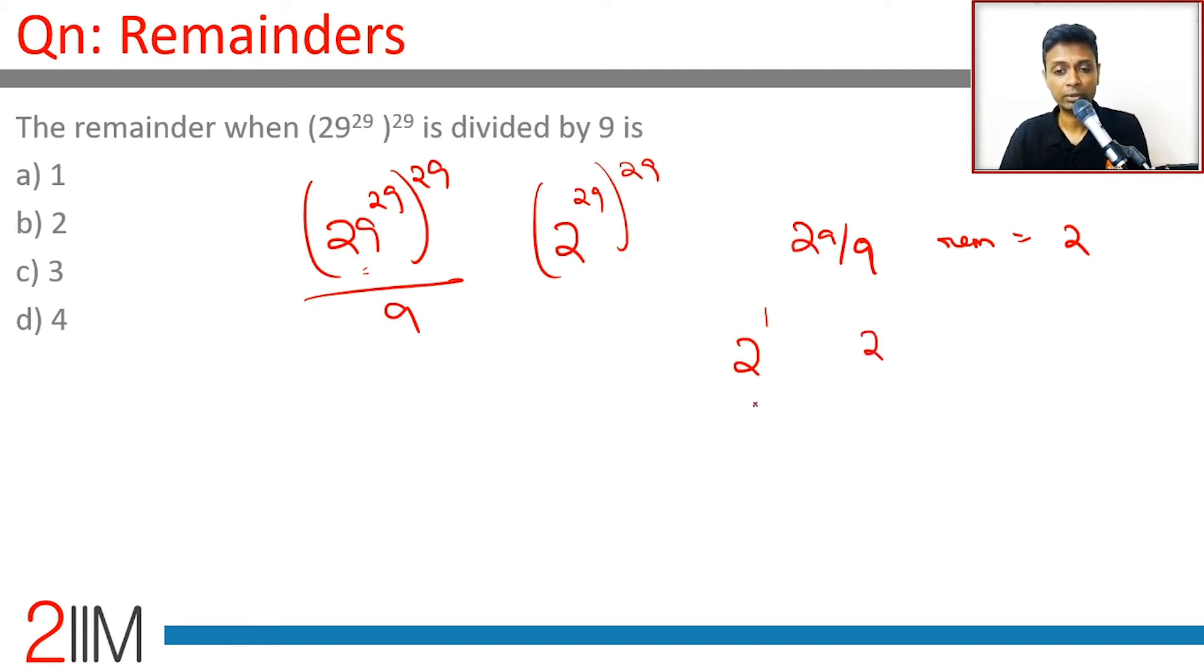2^1 divided by 9 gives 2. 2^2 gives us 4. 2^3 gives us 8. 2^4 is 16 which gives us 7. 2^5 is 7 times 2 equals 14 which is 5. 2^6 is 5 times 2 equals 10 which is 1. So 2^6 leaves a remainder of 1.